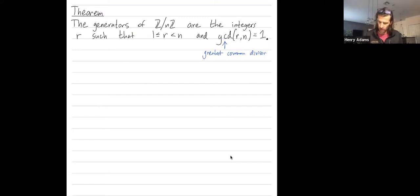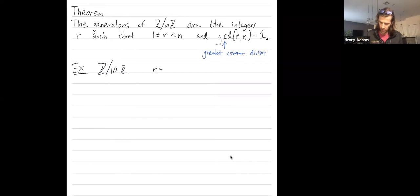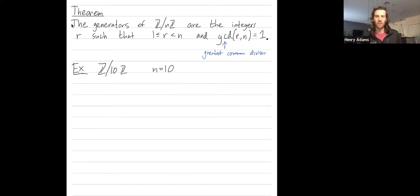So let's do an example in the group ℤ mod 10ℤ. I'm doing the case n equals 10. Let's see what elements generate ℤ mod 10ℤ.